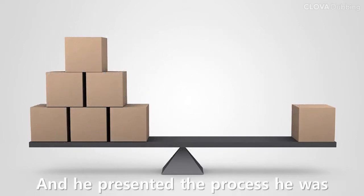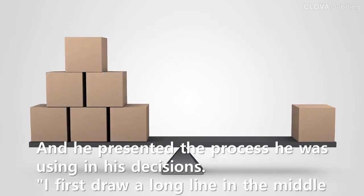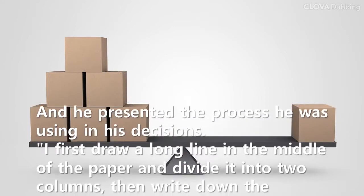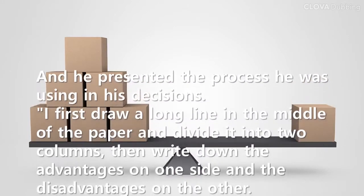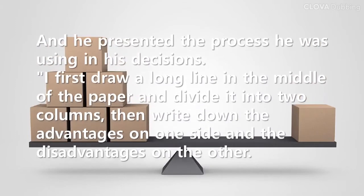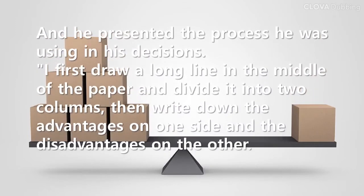And he presented the process he was using in his decisions. I first draw a long line in the middle of the paper and divide it into two columns, then write down the advantages on one side and the disadvantages on the other.